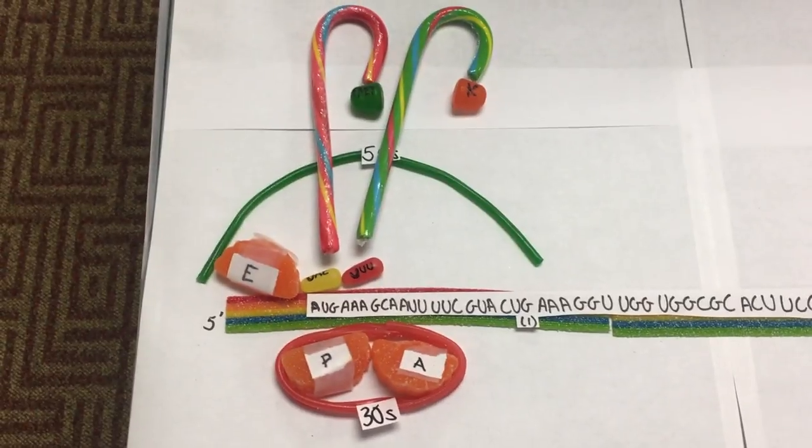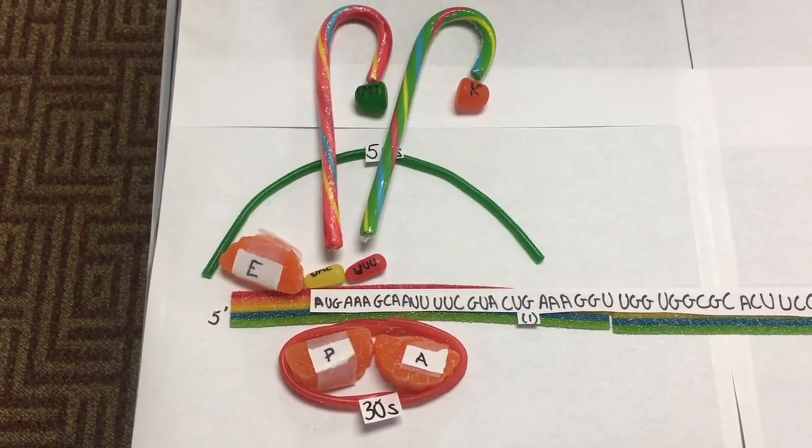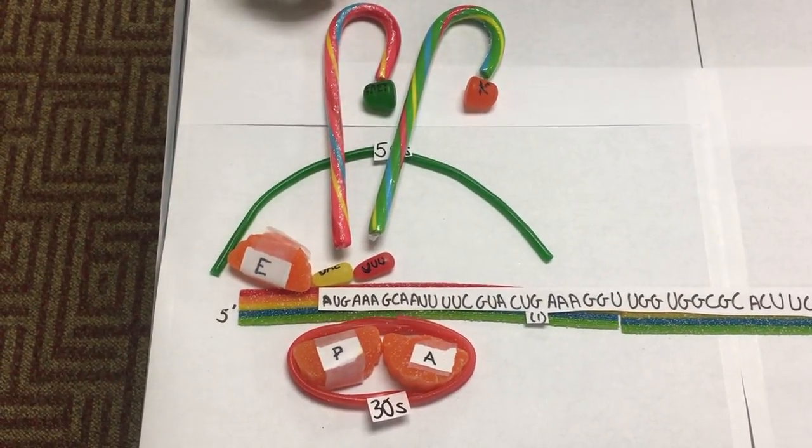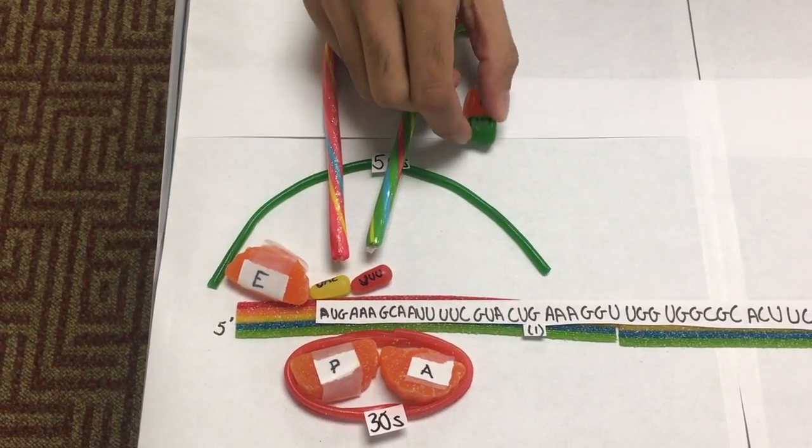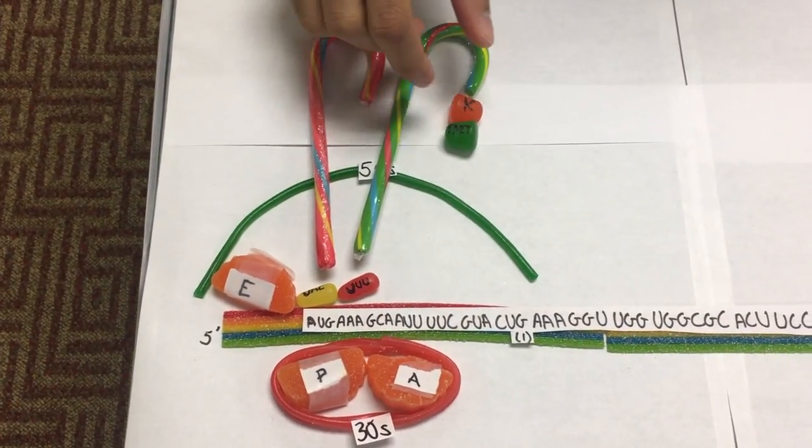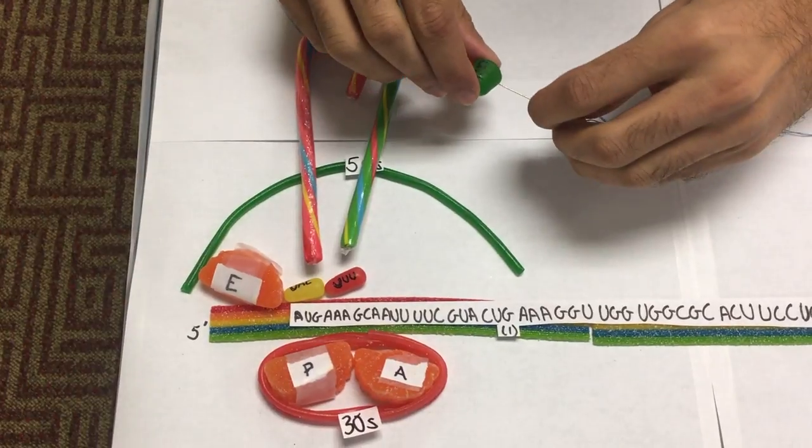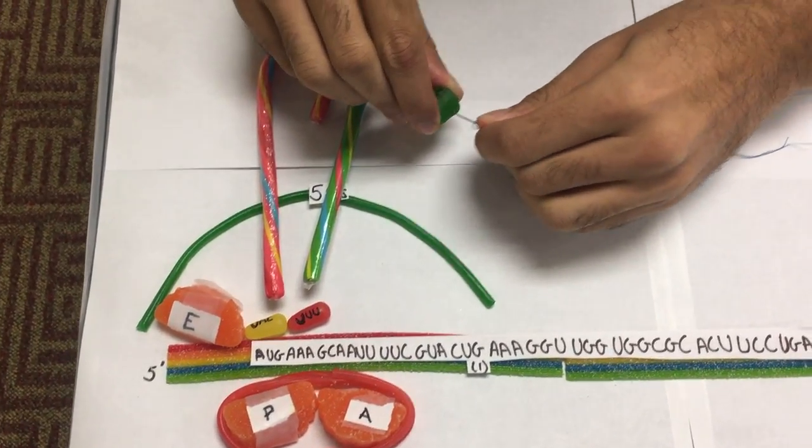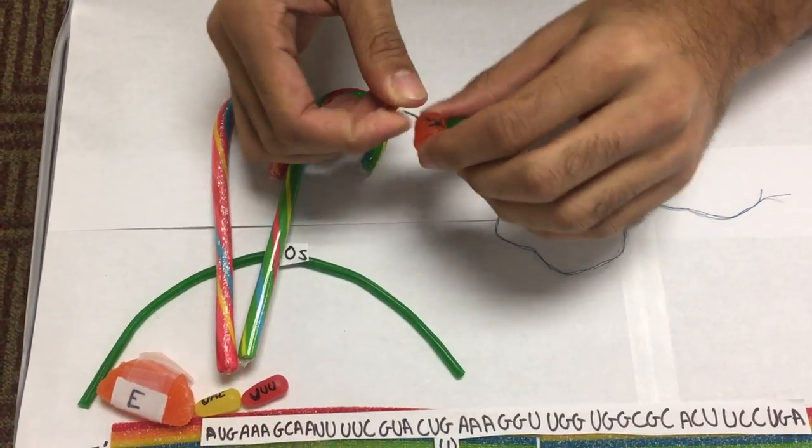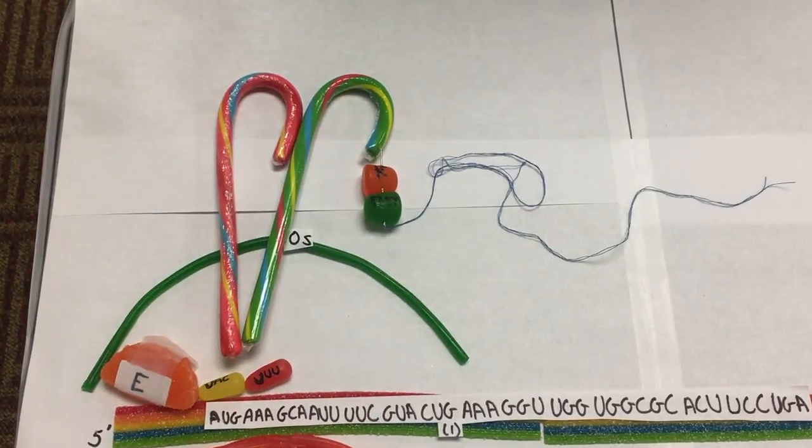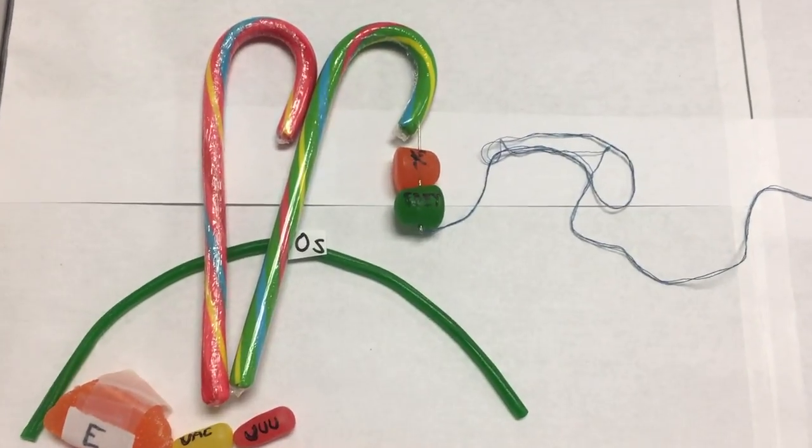The next step is the formation of the first peptide bond. The FMET from the P site goes to the A site and is joined together by peptidotransferase. Just like that. So this results in an uncharged tRNA in the P site.